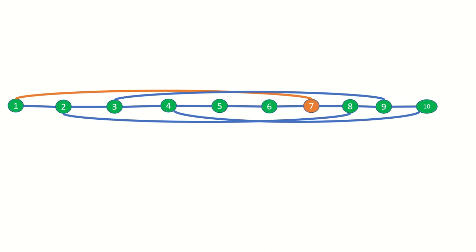If that happens to not be the last vertex, as is the case in this example, then we can proceed in two ways to reach the final vertex from the final 1 mod 6 vertex. One, we can go right from the last 1 mod 6 vertex, or two, we can go left from the vertex until we are able to skip forward to our final vertex.